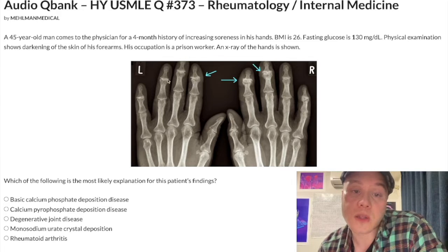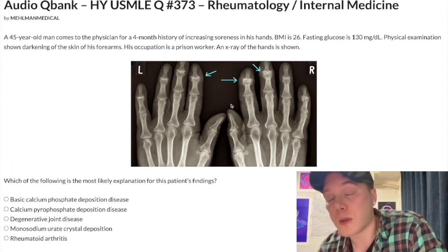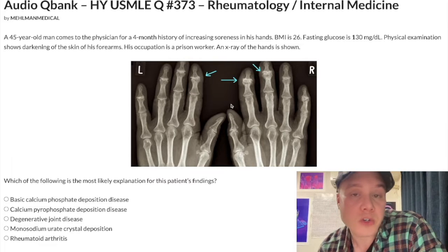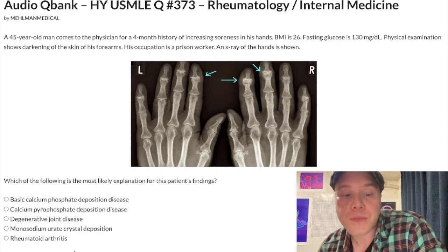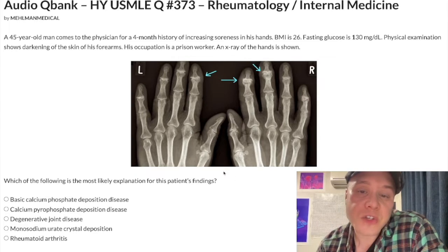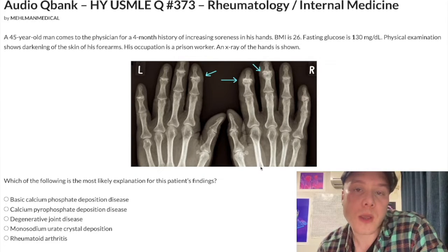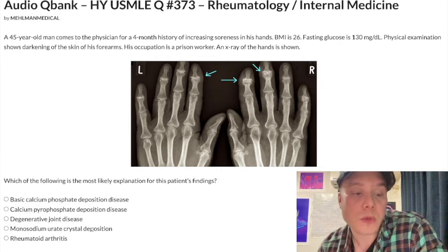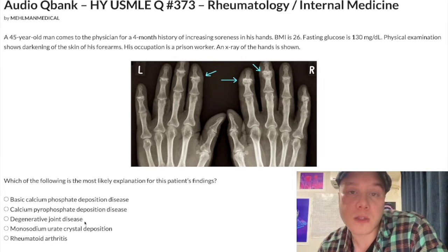So in the image here, we've got Heberden nodes — osteophytes of the DIPs. If they're at the PIPs, those are Bouchard nodes. In rheumatoid arthritis, you can get boutonnière deformity or swan neck deformity. The point is, at least initially, we have an osteoarthritic picture. Nine out of ten questions where you get DIP involvement, the answer is osteoarthritis — degenerative joint disease — which in this case is the wrong answer.